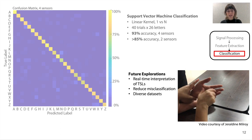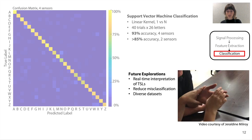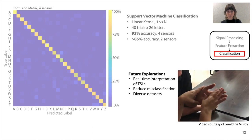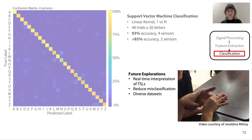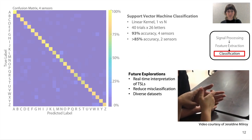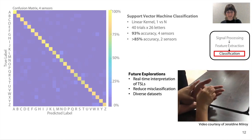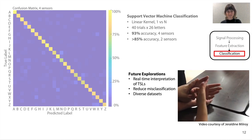Future work will aim to reduce misclassifications and include diverse datasets from trained TSL signers. We further envision supporting real-time interpretation of TSL, where signing can occur as fast as five letters per second. Thank you for your time.